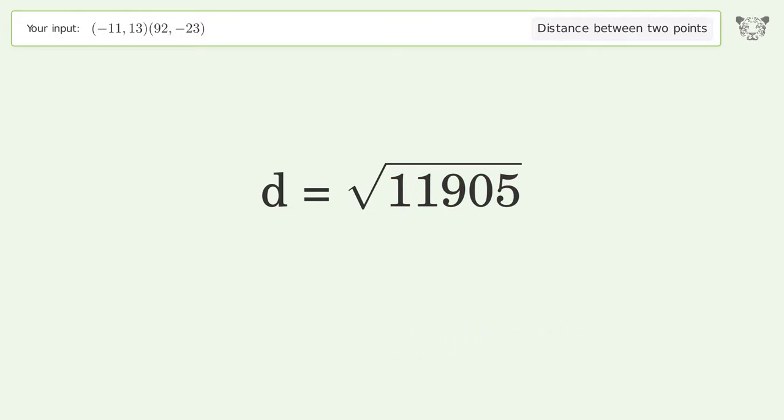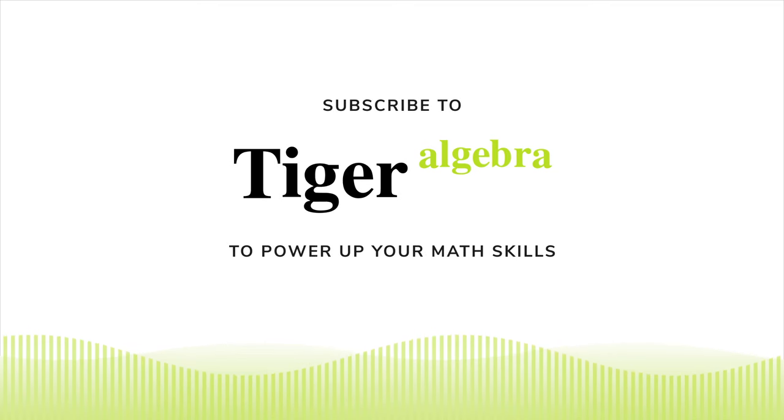And so the distance between the two points is the square root of 11905, or 109.11.